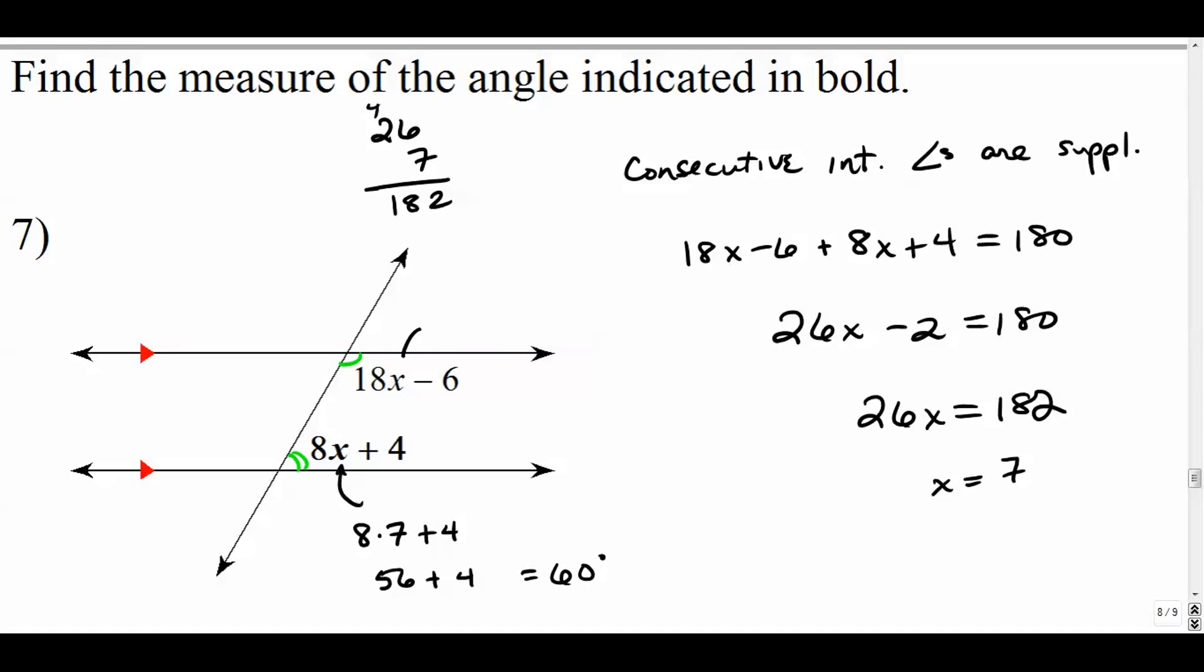And if you're really thorough, you might check the top one as well to see if you get its supplement. 18 times 7. 18 times 7 is 70 plus 56. That's 126. And we'll subtract 6 from that and we get 120, which is good. Because 120 and 60 should be supplements of each other.